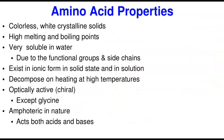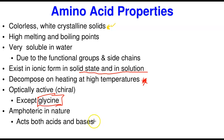Amino acid properties: they are colorless white crystalline solids. They have high melting and boiling points due to the polarity of the groups around them. They are very soluble in water due to the carboxylic and amino functional groups, and even more so when side chains are polar or charged. They exist in the ionic state in solution. They decompose at high temperature. They are optically active — able to undergo stereochemistry — except glycine. And they are amphoteric in nature, acting as both acid and base.